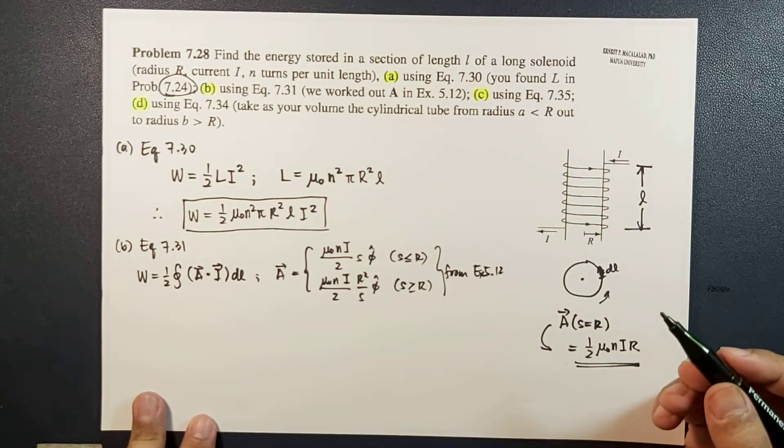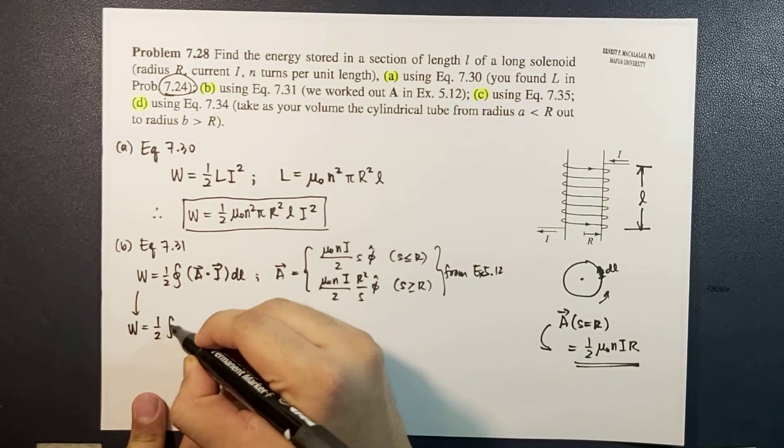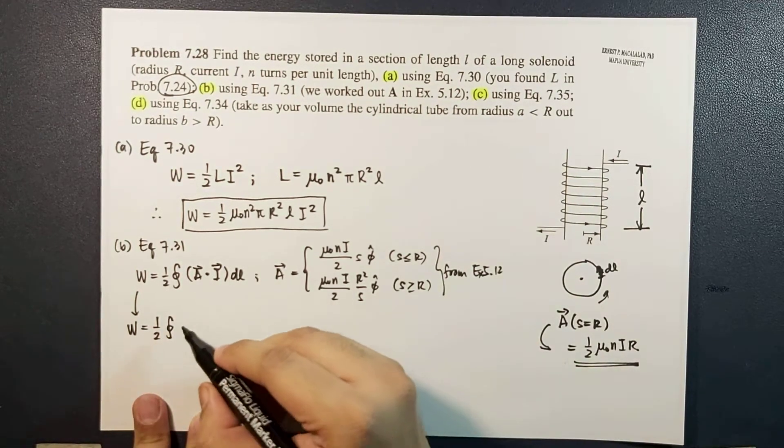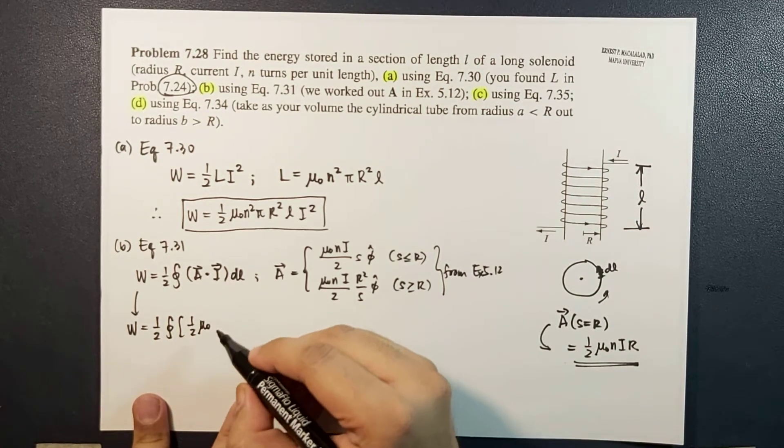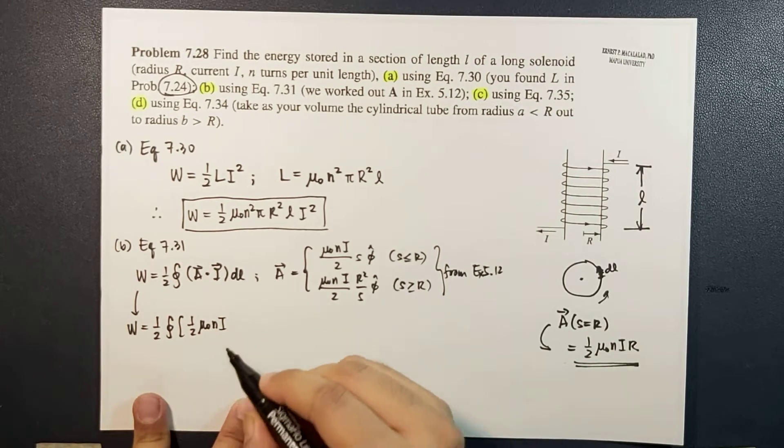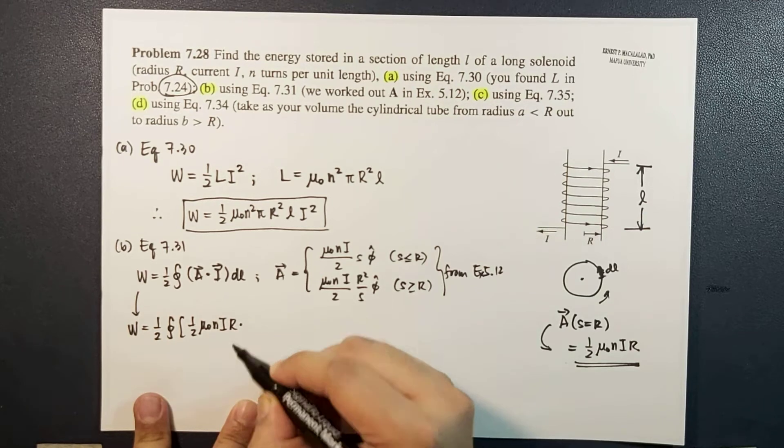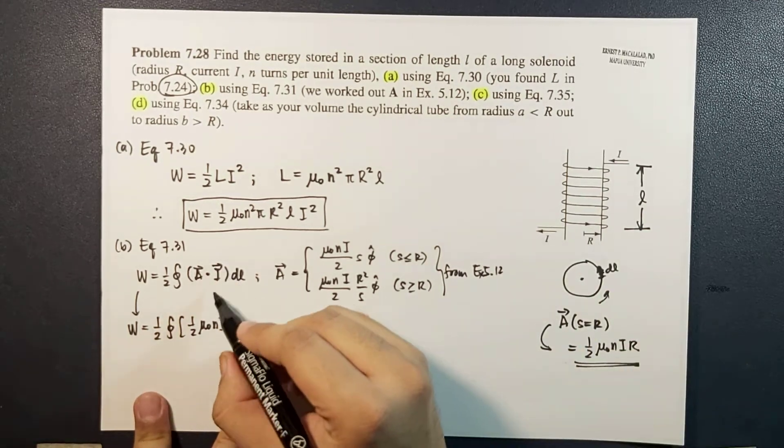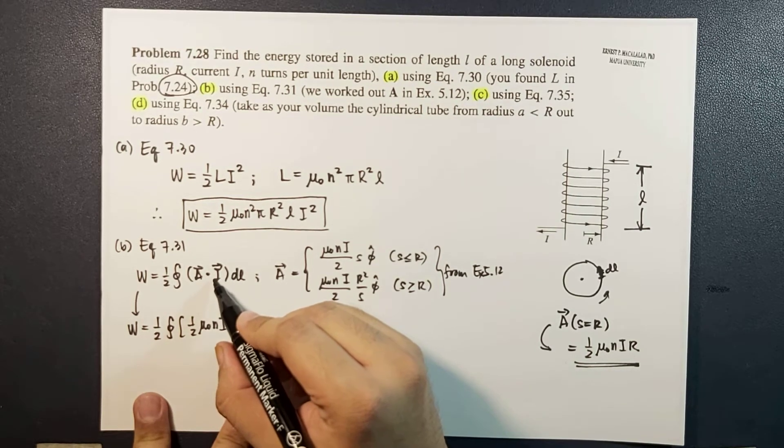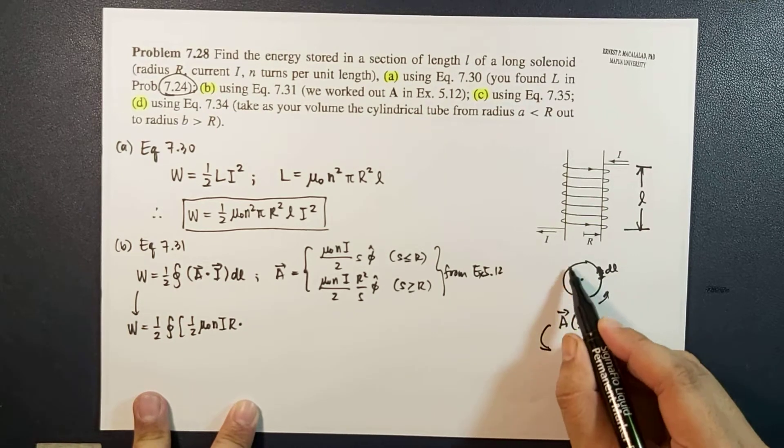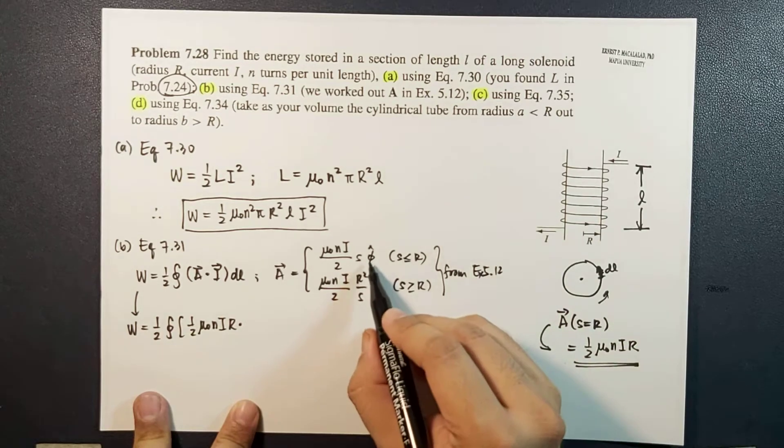Now let's do the integration. The stored energy will now be equal to the closed integral times one half of one half μ₀nir dotted with i. Your i vector represents the magnitude of the current along this wire, and this direction is also φ̂.